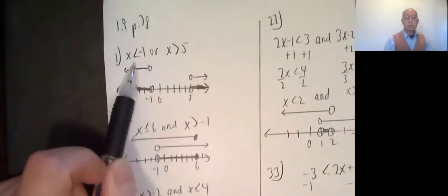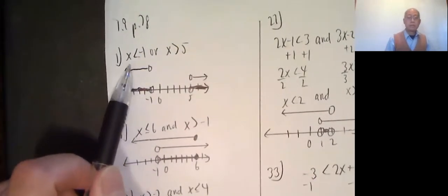All right, so we have compound inequalities. In this section, we're connecting with the words or or and, as the case may be. But we're piggybacking off of what happened in the last section, 1.8.